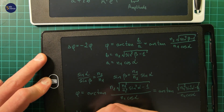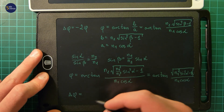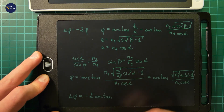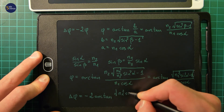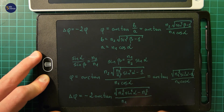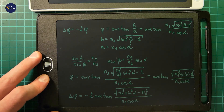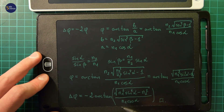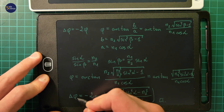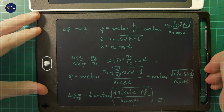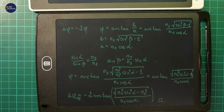The final result is that the total phase shift delta φ is minus 2 times arctangent of the square root of (n1 squared sine squared alpha minus n2 squared), over n1 cosine alpha. This is the total phase shift that the wave undergoes when reflected from the boundary under total internal reflection, and this applies to transverse electric modes — when the electric field is perpendicular to the plane of incidence. If you have questions, put them in the comments below. Thanks for watching and see you next time.